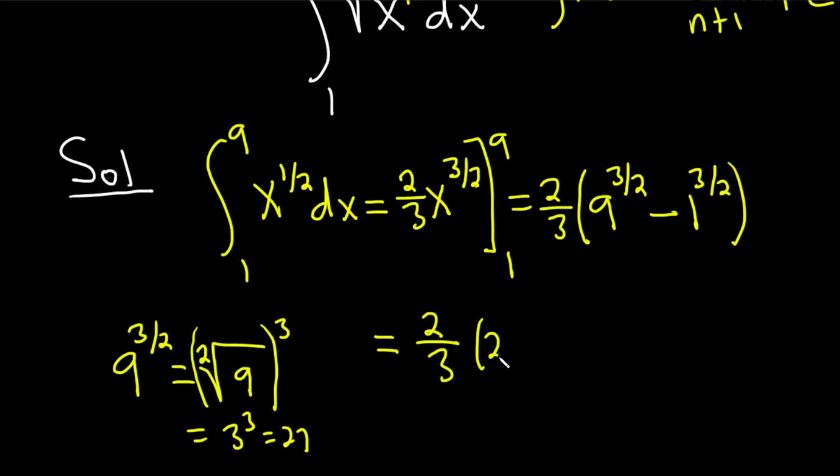So this is going to be 27 minus 1. So this is 2 thirds, right? Because 1 to the 3 halves is 1. And then 26. So this is equal to 52 over 3 because 26 times 2 is 52. And that would be the answer to this problem.